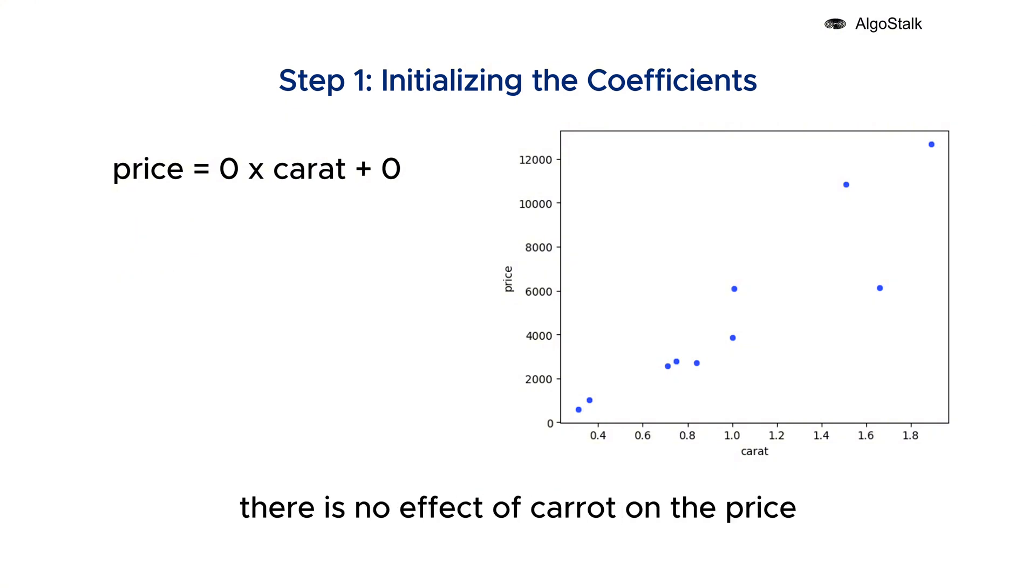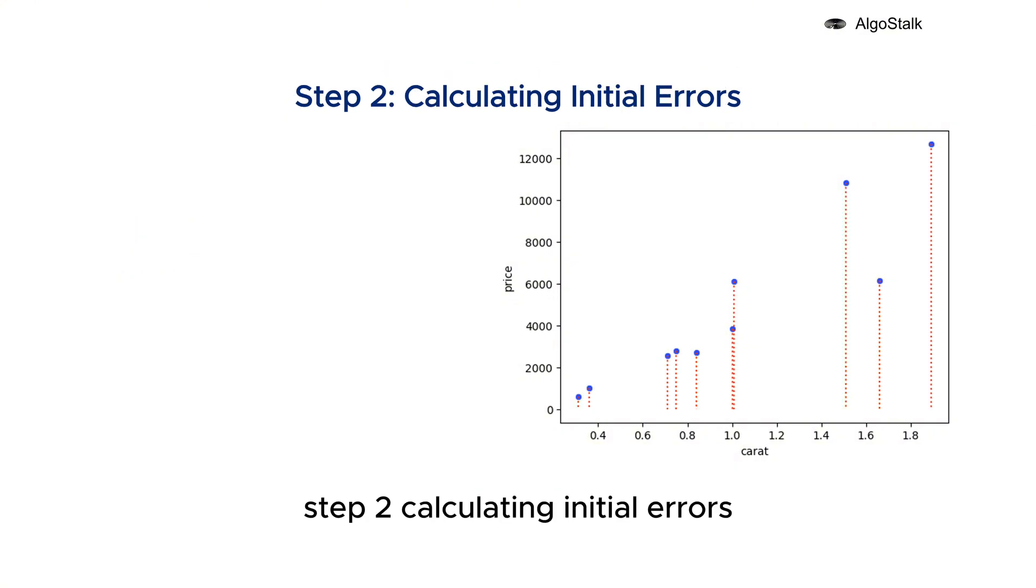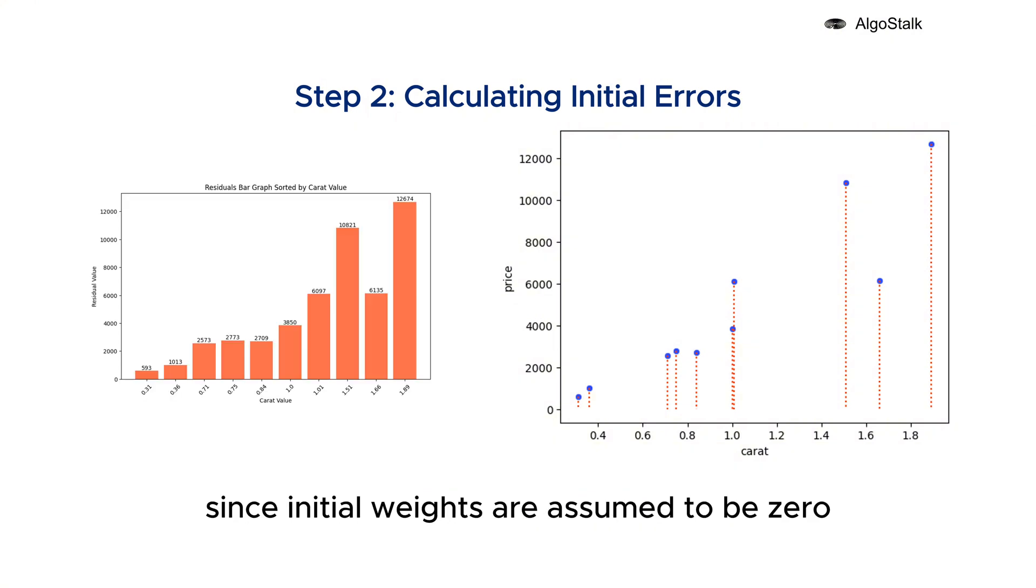Step two: calculating initial errors. Huber then calculates the errors, the difference between what the model predicts and the actual prices, just like linear regression does at the beginning. In our case, since initial weights are assumed to be zero, the residuals would be same as the initial price values.